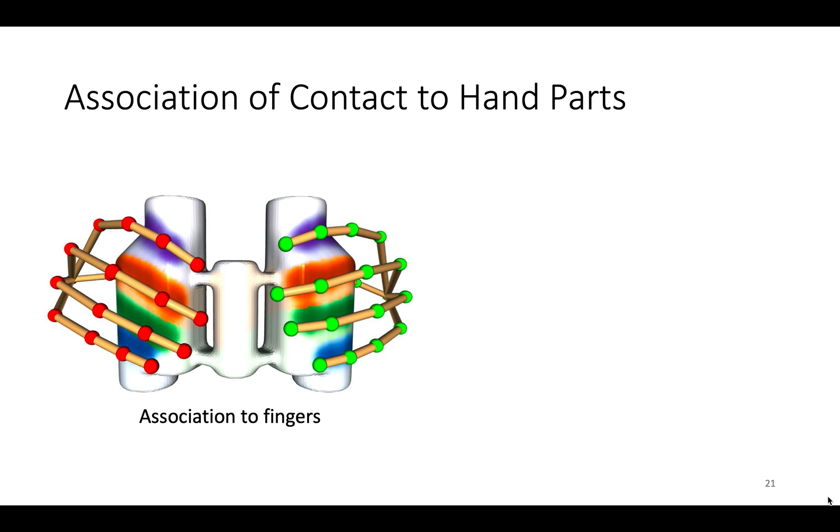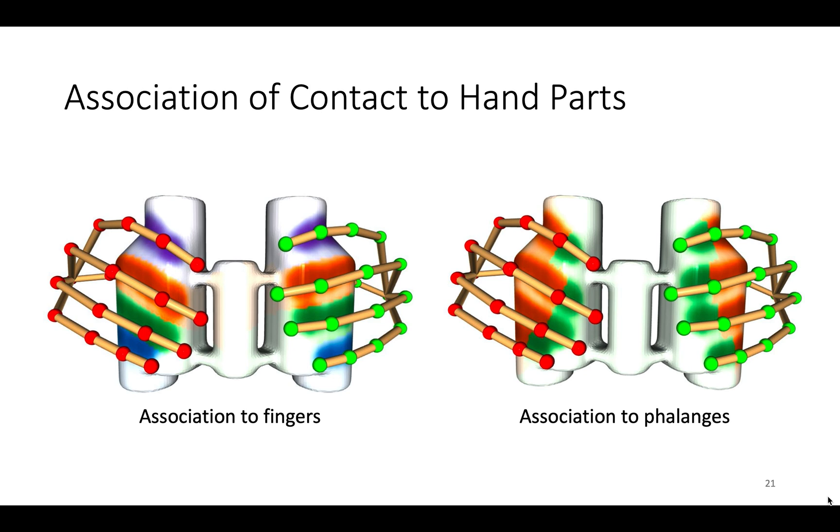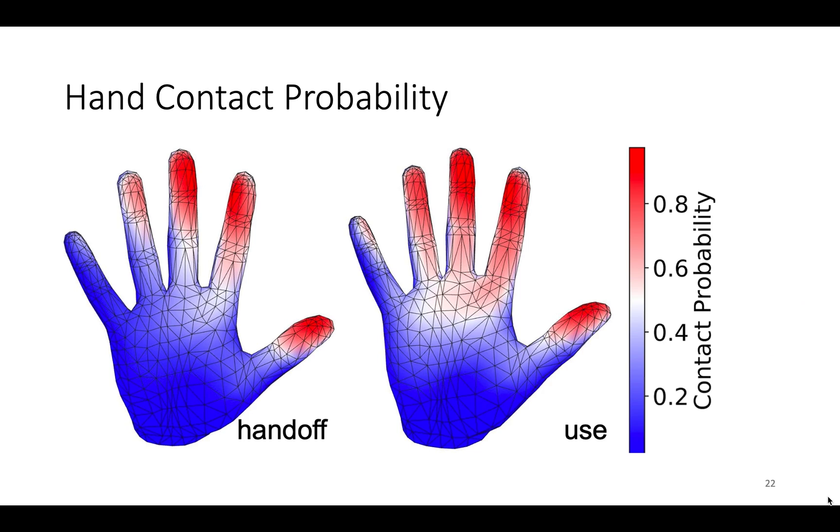We can also associate contacted object points to the hand parts responsible for contact using nearest neighbor. This figure shows non-contacted areas in white and contacted areas color-coded by nearest finger, and similarly by nearest phalange. Now let's look at some analysis of the data. We use this association to calculate contact frequency over the entire hand, revealing some interesting patterns.